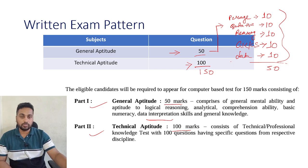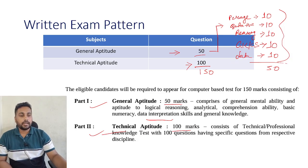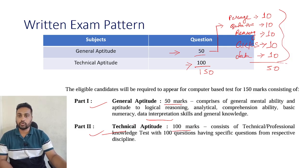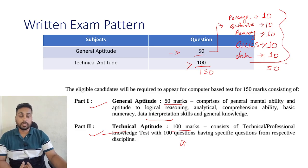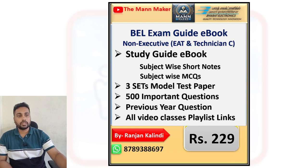All these General Aptitude topics you are going to see in the study material which I will provide. For the technical section, 100 questions will come from whatever branch you are applying for — either EAT or ITI trade. Whatever your trade is, from there only you will get 100 questions. I will provide you everything: what topics are in your syllabus and what study material you need to cover for this exam.